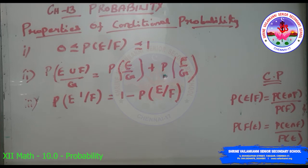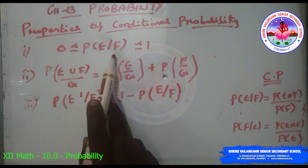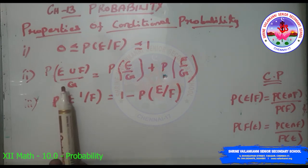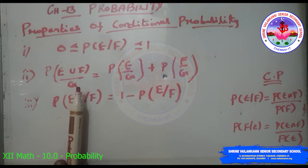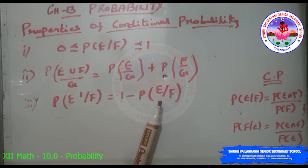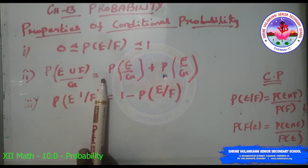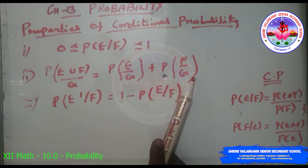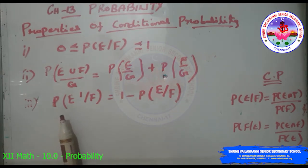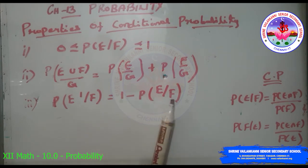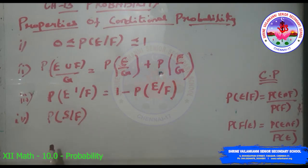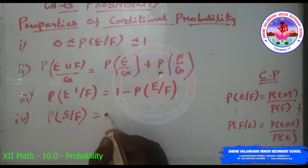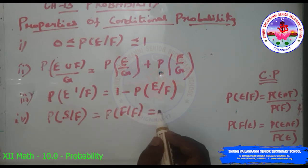Properties of conditional probability. First: P(E|F) lies between 0 and 1, i.e., 0 ≤ P(E|F) ≤ 1. Second: If E and F are any two events associated with sample space S and G is an event such that P(G) ≠ 0, then P(E∪F | G) = P(E|G) + P(F|G). Third: P(E'|F) = 1 − P(E|F). Fourth: P(S|F) = P(F|F) = 1.